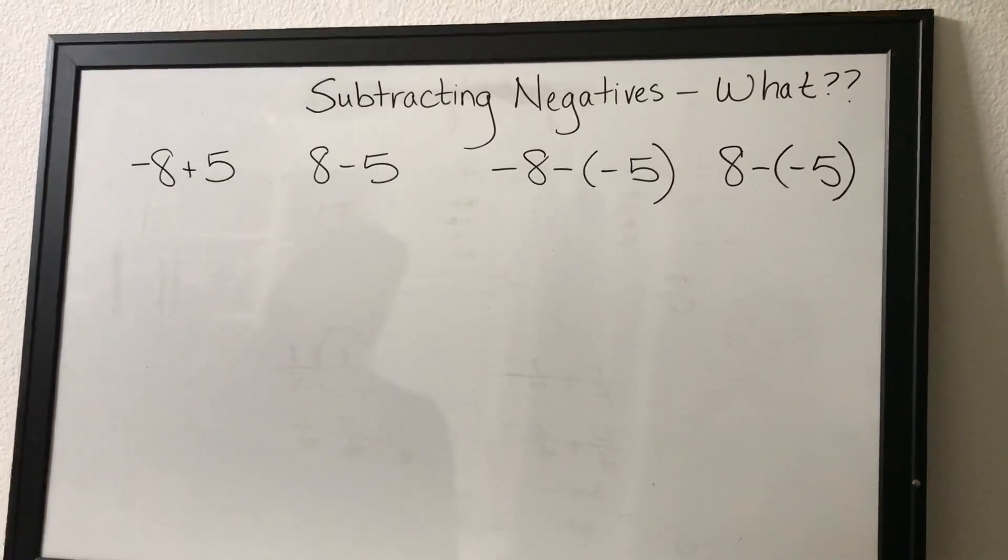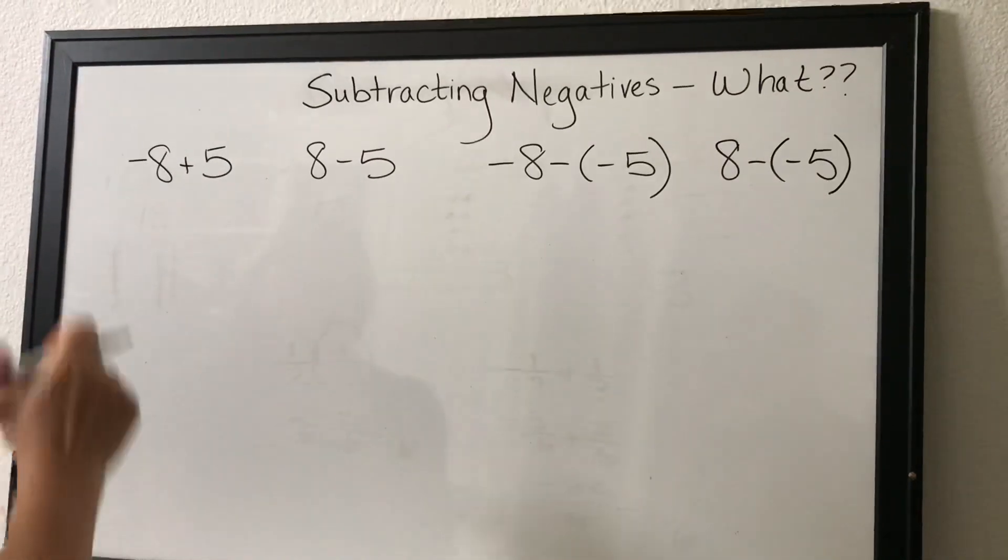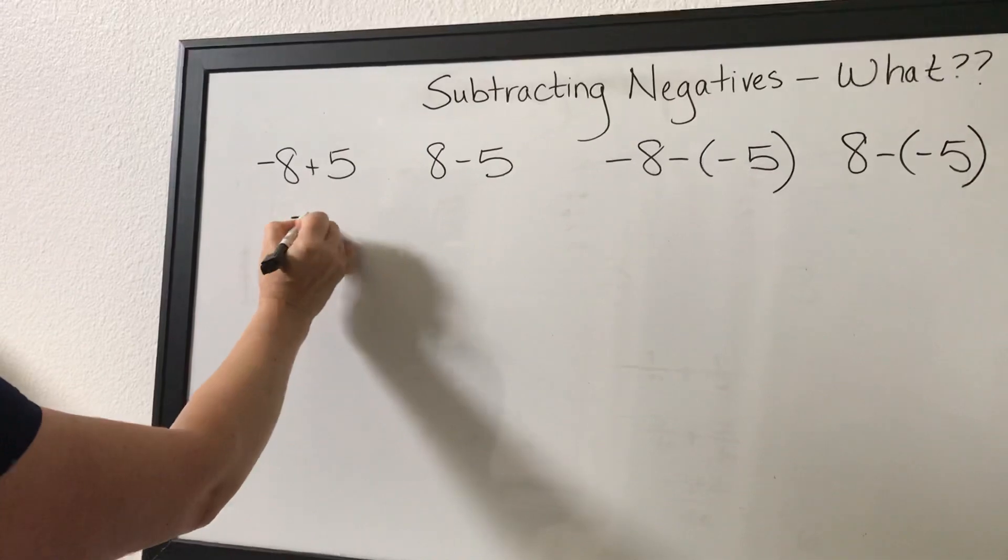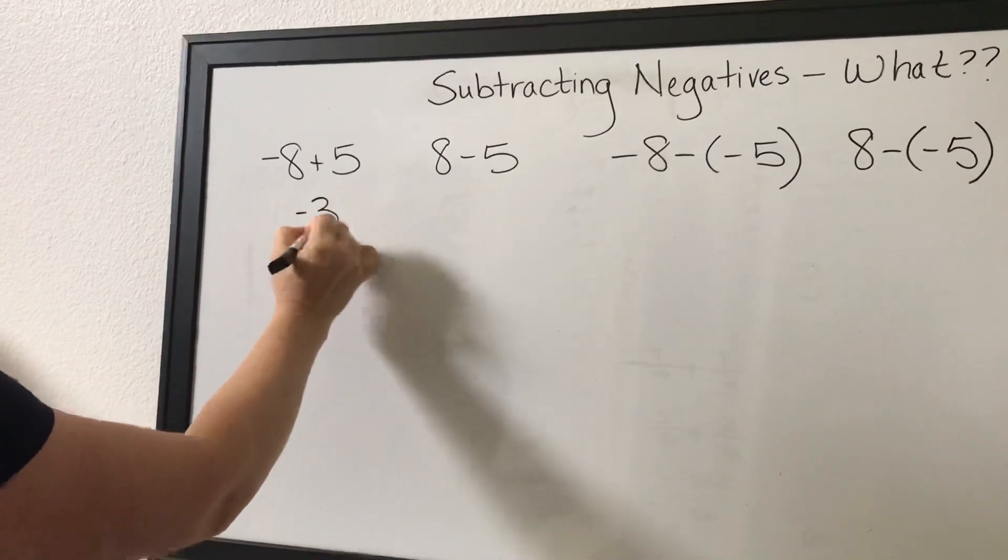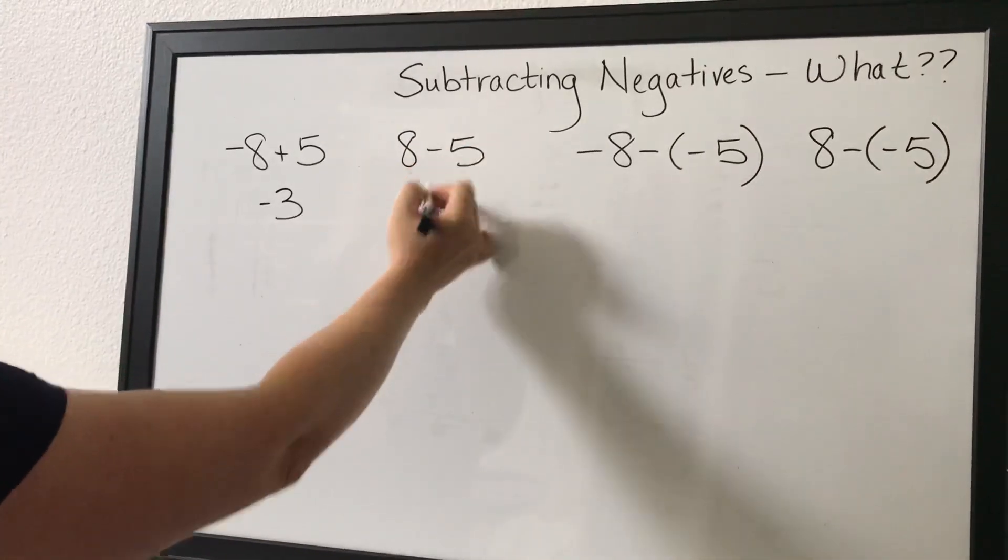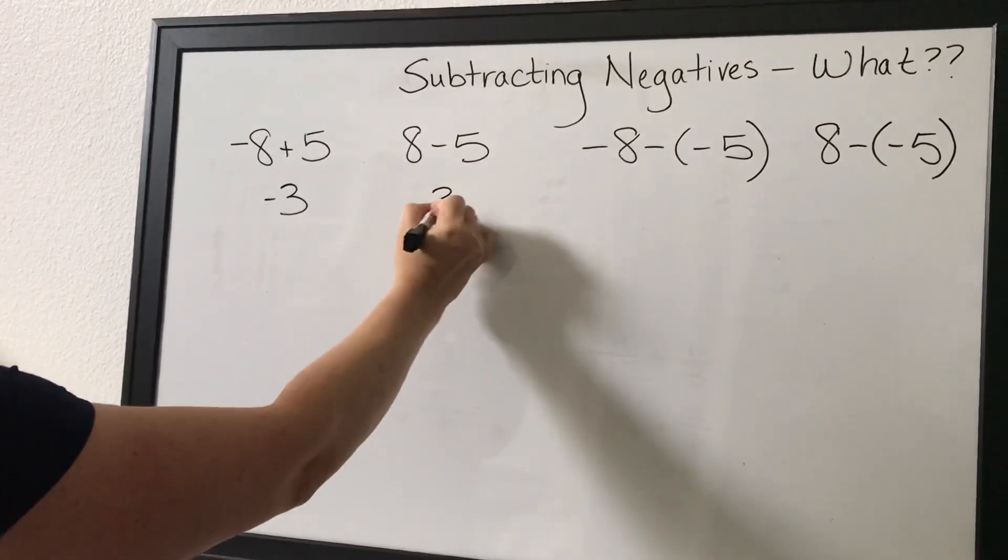Remember we talked about before that we're just combining values. So eight negatives, five positives, more negatives, there's three more negatives. Eight positives, five negatives, there's three more positives.